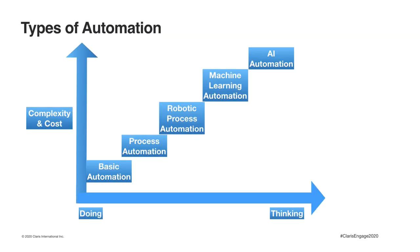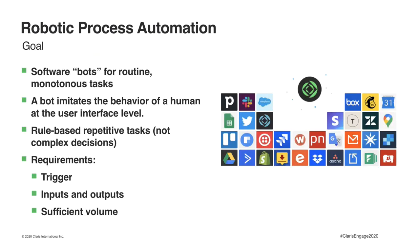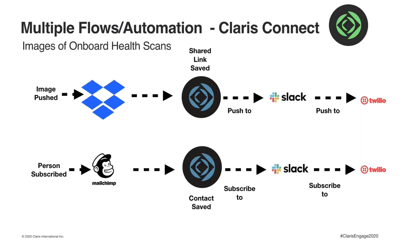Further up the scale: robotic process automation. There's a continuum of different levels of robotic process automation imitating human behavior. The requirements are a trigger (which is data), inputs and outputs (which is data), and sufficient volume for cost effectiveness. An example within Claris Connect: you have a trigger — an image pushed into Dropbox — then you share that link to FileMaker, and push it out to Slack and Twilio. The astronauts do this with images of their onboard health scans. People subscribed via MailChimp have their contact information saved and are automatically subscribed to Slack and Twilio, receiving these images via Slack or Twilio alerts.